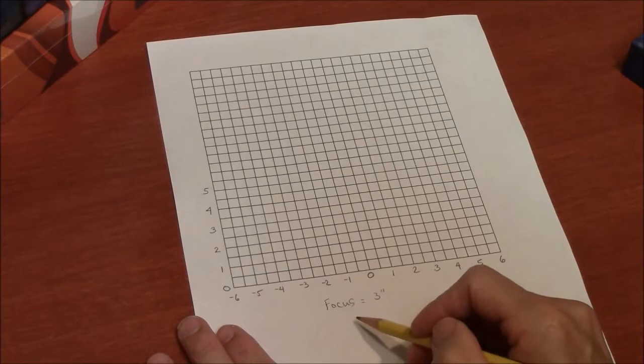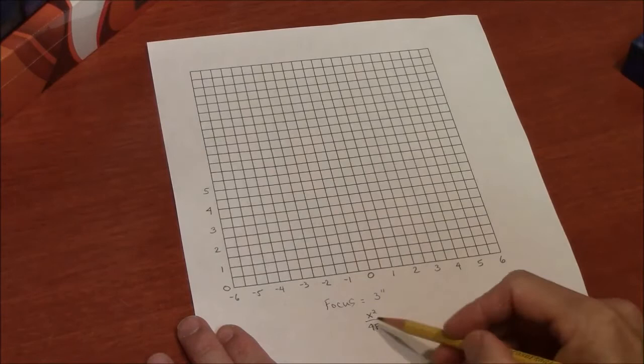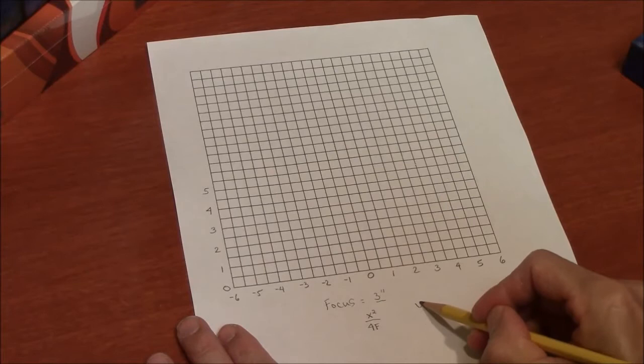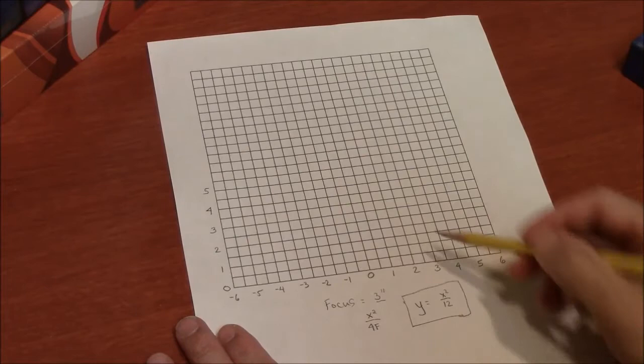And then the equation of the parabola is basically x squared over 4f, where f is the focal distance from the vertex. So if I imagine making the focus at three inches, then the equation of the parabola will be y equals x squared over 12. So this is what I will now graph by hand so I get an idea of what this parabola looks like.